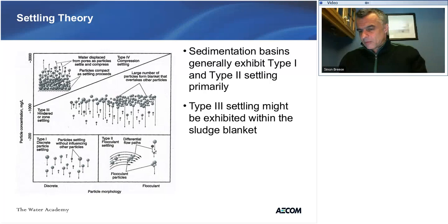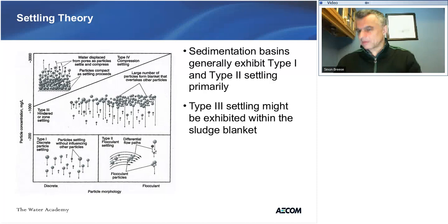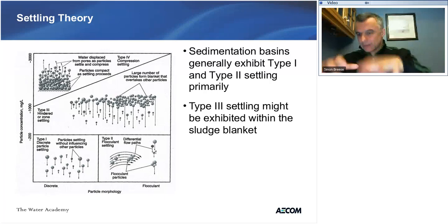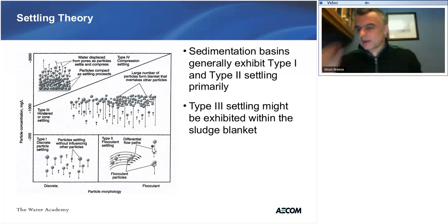Once you get to the lower depths of the basin, you get into hindered settling or Type 3 settling — where there are so many particles that they actually slow down each other's settling velocity. That's when you get into the sludge blanket. Type 4 is when things get really thick; usually seen in a thickener, where the sheer weight of solids physically compresses the sludge and pushes water up, concentrating the sludge. Type 1 and 2 predominate in typical sedimentation; Type 3 is seen in the sludge blanket.